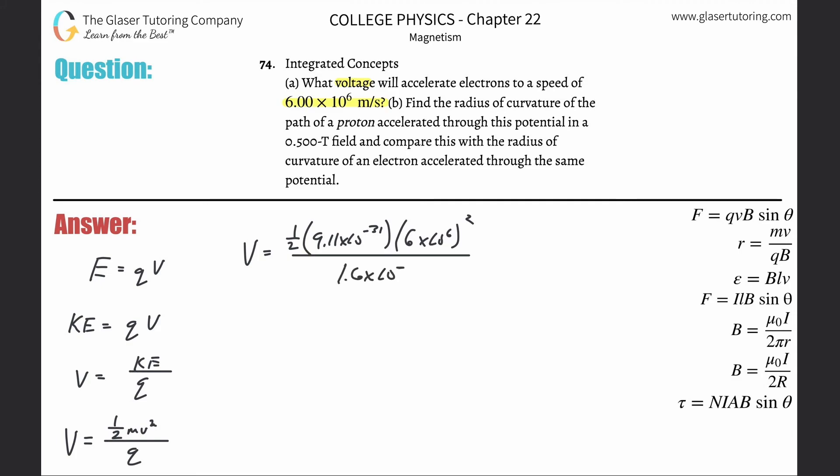Don't forget to square it, and then divide it by the charge of 1.6×10^-19. So 0.5 times 9.11×10^-31 multiplied by 6×10^6 squared, divide that then by 1.6×10^-19. So it's about 102 volts.